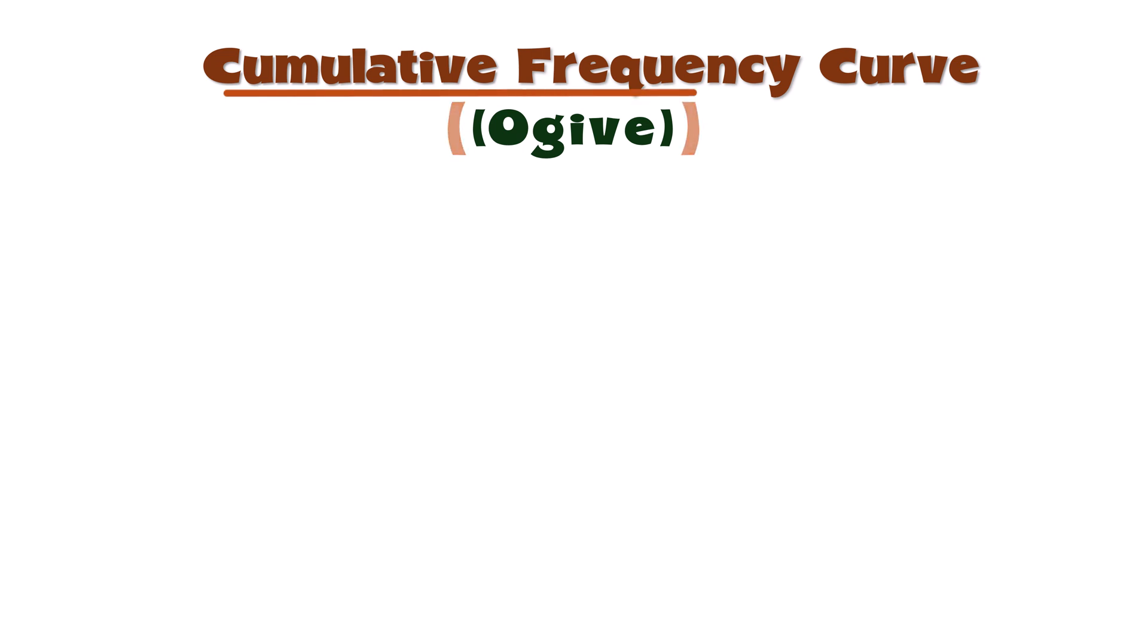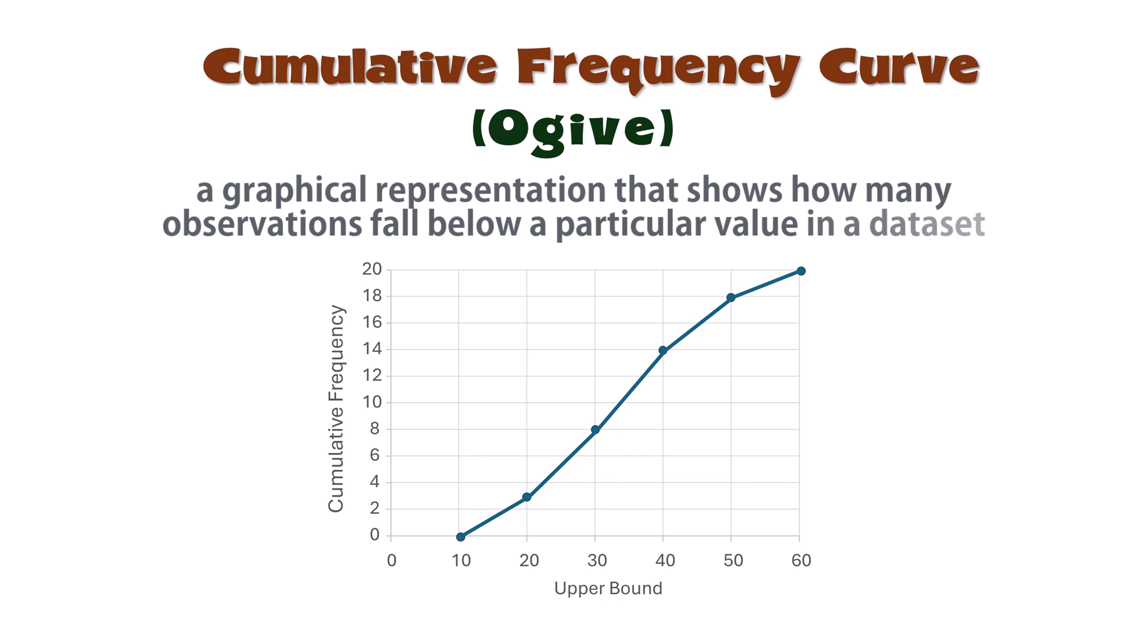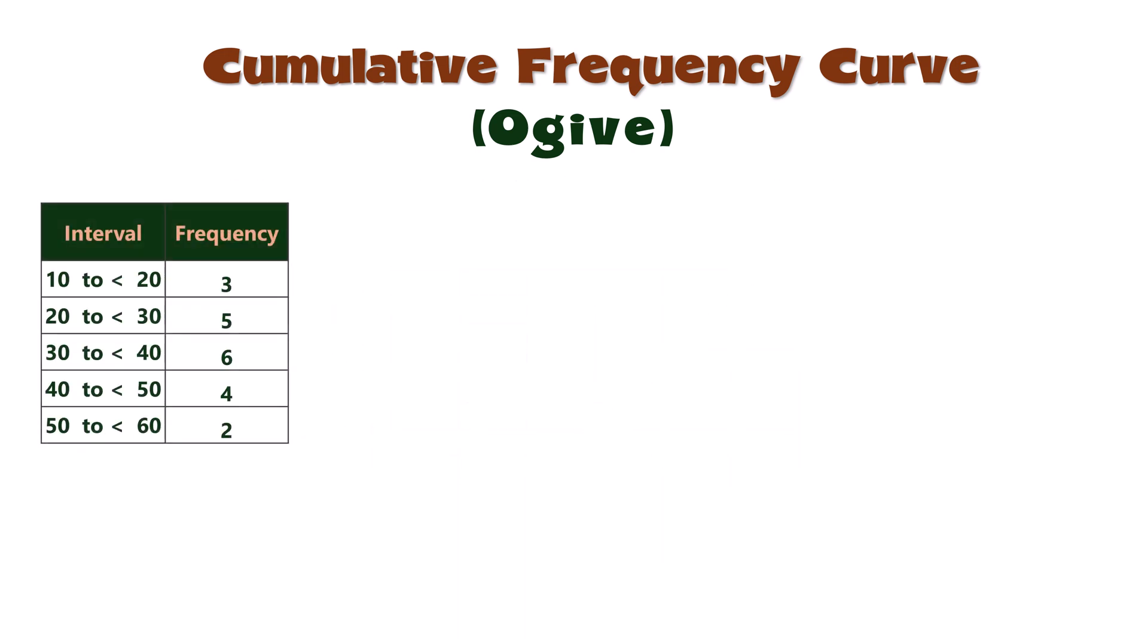An ogive or cumulative frequency curve is a graphical representation that shows how many observations fall below a particular value in a data set. Let's begin with this frequency distribution where each class interval has a width of 10.